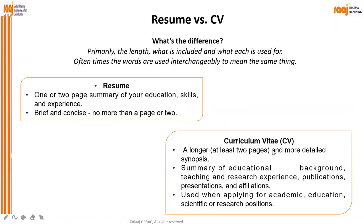What is the difference between a resume and a CV? A resume is a one or two page summary of your education, skills, and experience — brief and concise, no more than two pages. The length and words you include matter greatly. A curriculum vitae, or CV, is a little longer — at least two pages — and a more detailed synopsis of your skills, educational background, teaching and research experience, used when applying for academic, scientific, or research positions.